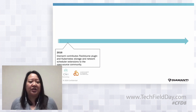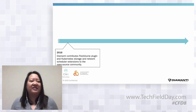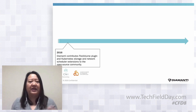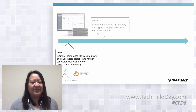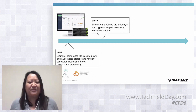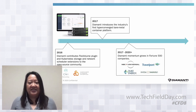As the Kubernetes community was getting started, one of the first things Diamante's founding team got involved in was the creation of the Flex Volume plugin. Before that, every single storage plugin was a custom plugin that had to get integrated into the core Kubernetes project. In 2016, Diamante helped contribute the Flex Volume plugin, giving a common interface into Kubernetes — serving as the precursor to today's CSI interface. We also contributed scheduler extensions to extend Kubernetes, and in 2017 introduced the first hyperconverged bare metal platform incorporating IO acceleration offload technology.